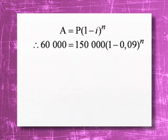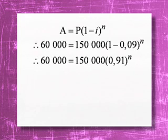Here is the formula I'm going to use. Let's plug in the values. The present value is 150,000 and my future value is 60,000. Remember the decimal which is 0.09. What I'm looking for is n because I'm looking for time. Let's sort out the bracket.